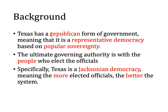Texas has a Republican form of government — that is Republican with a little R, not a Republican with a big R, which is the party. This means our government is a representative democracy based on popular sovereignty. The representative democracy part means that we as voters elect people to go to Austin and make the laws on our behalf. We don't actually vote on whether something should be a law. The popular sovereignty part means that it is us, the people, the voters, who decide who is going to be the leader in government.